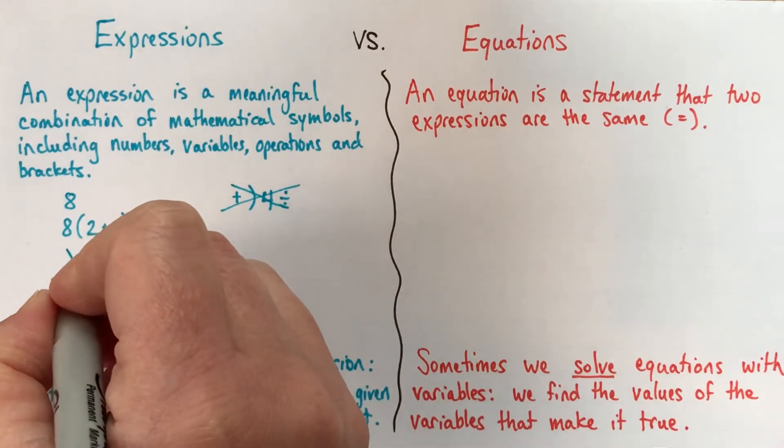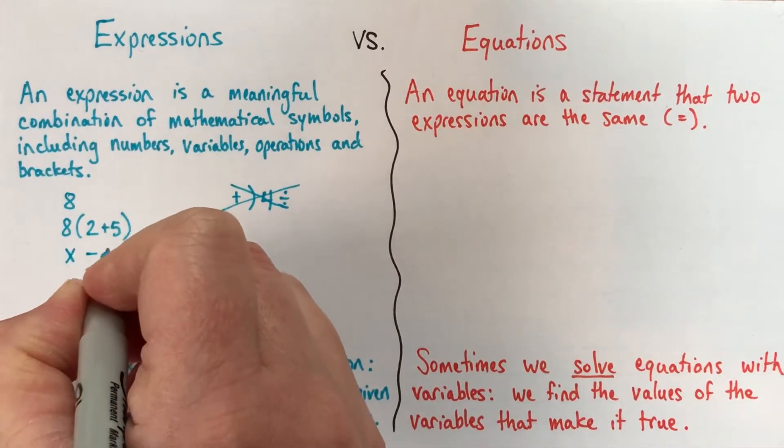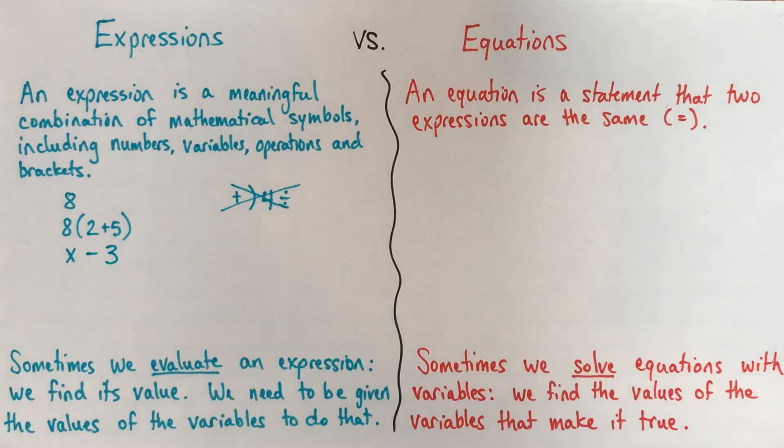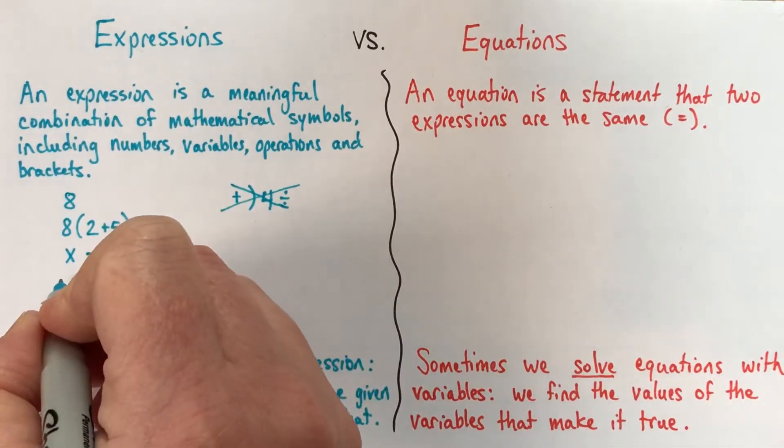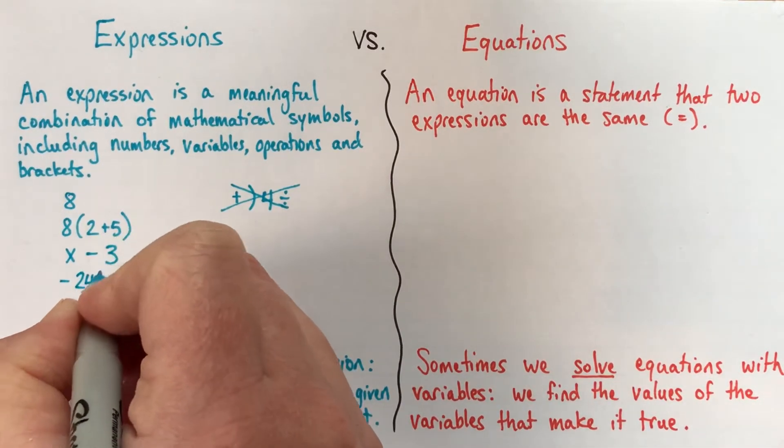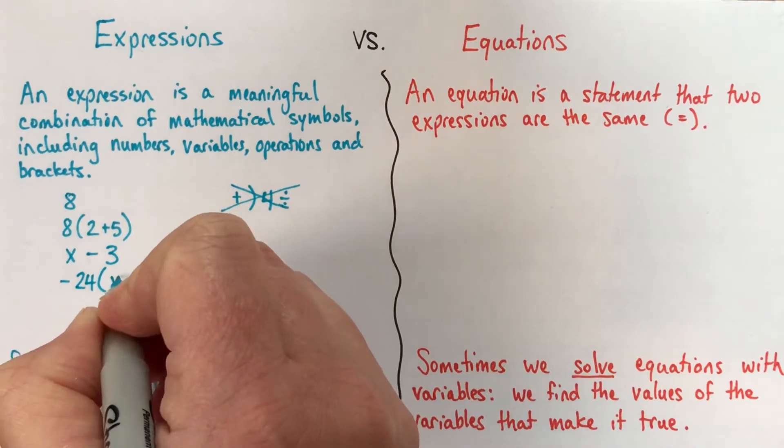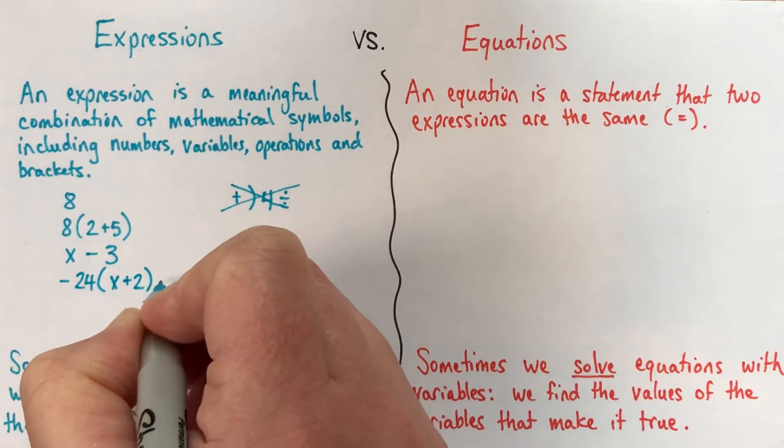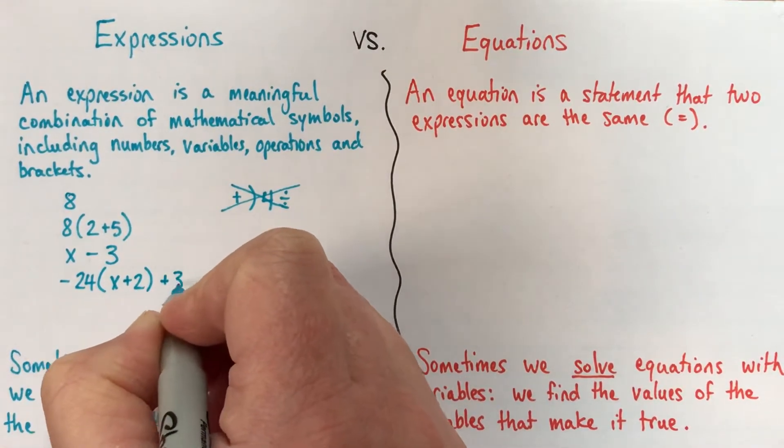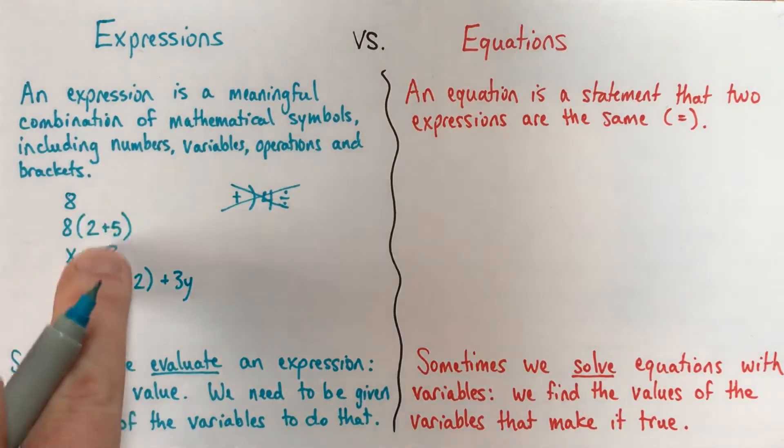Often we use the word expression when we have variables, so we could have x subtract 3, we could have something a little bit more complicated like negative 24 times, say, x plus 2 plus 3y, right? So these are four expressions here.